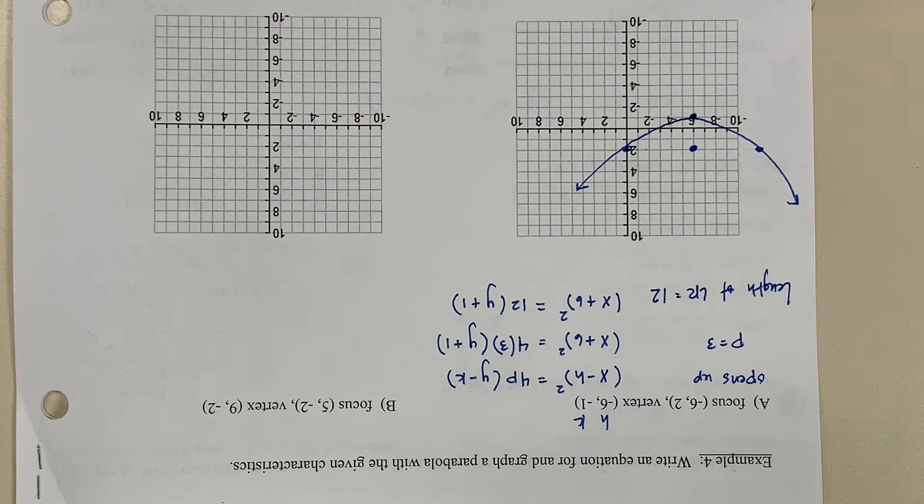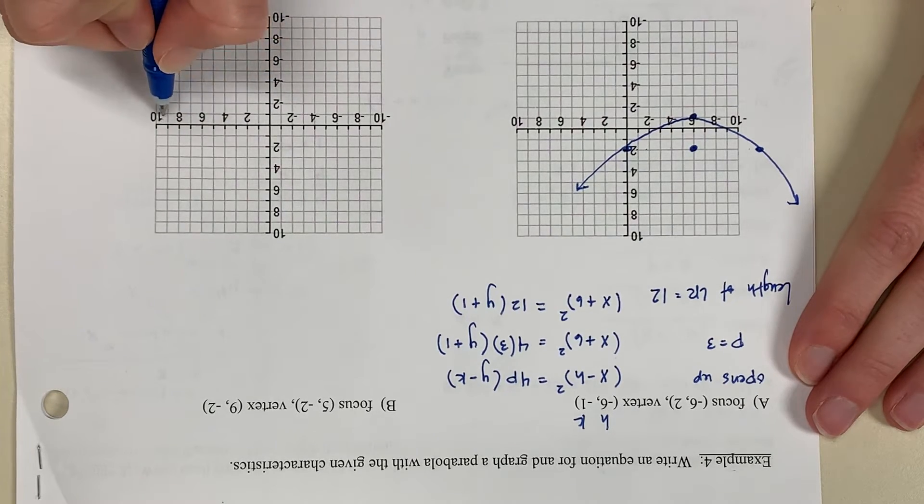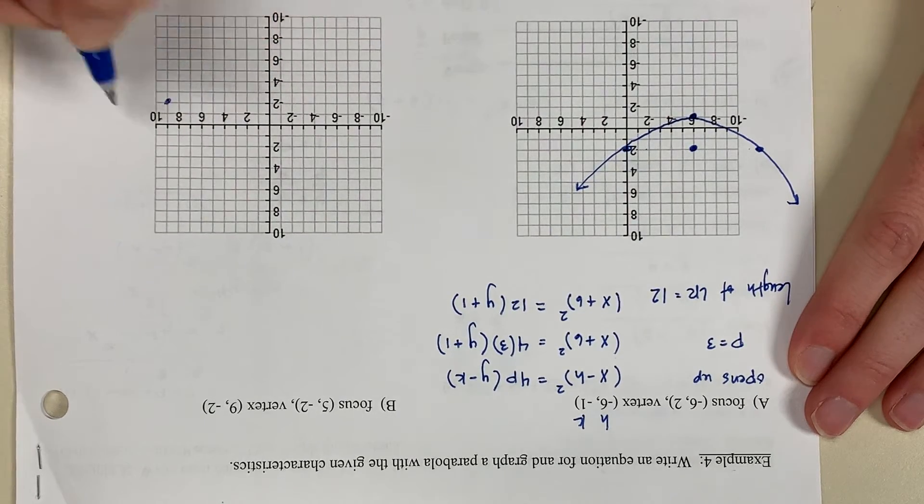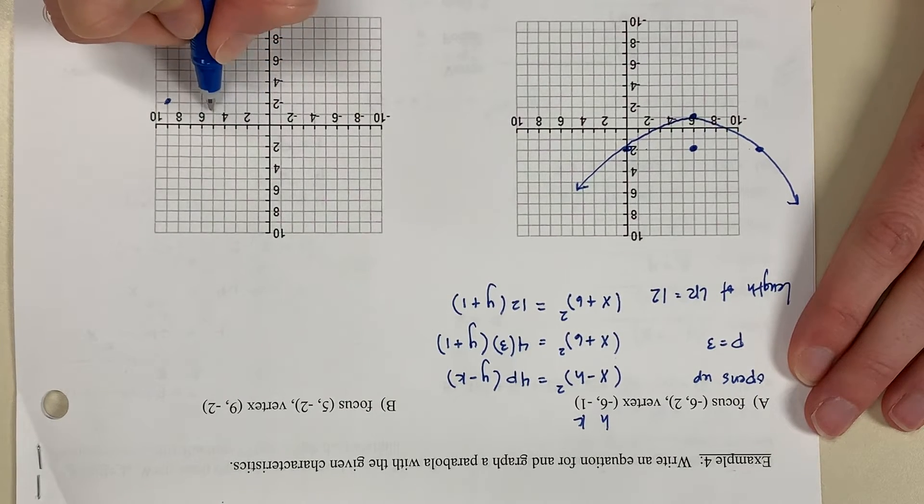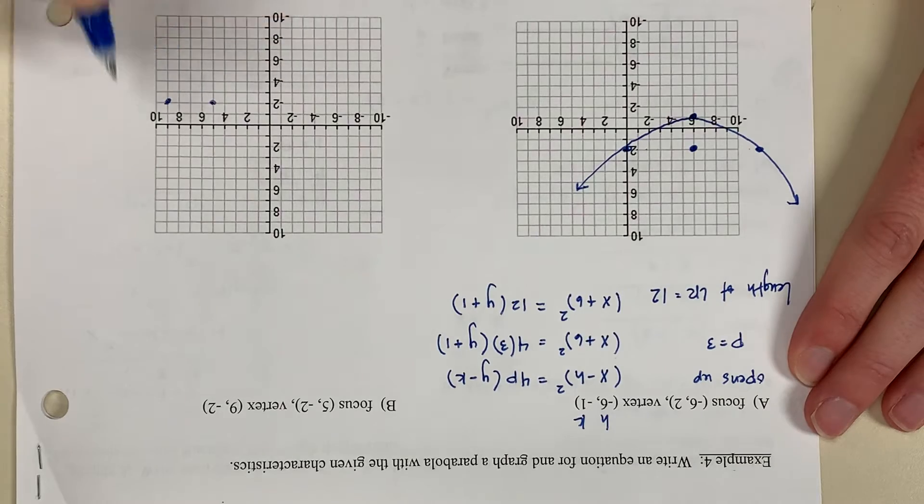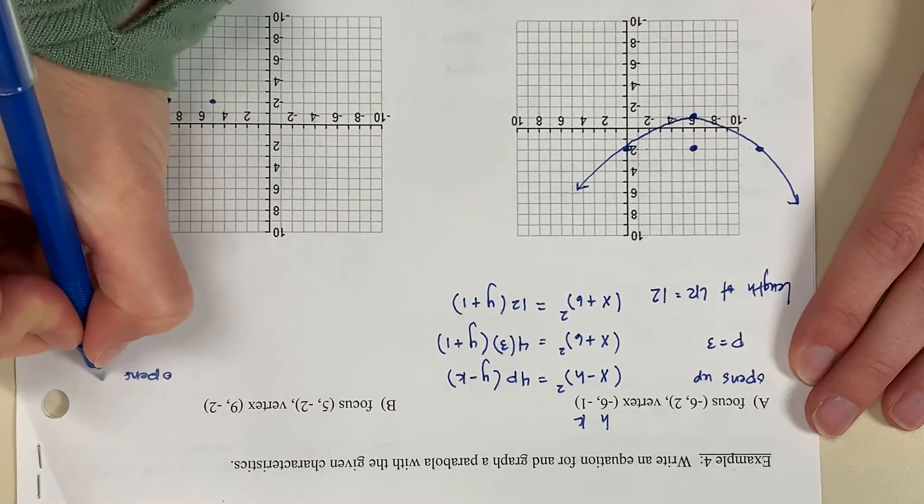Now in letter B, I have a focus at 5 negative 2 and a vertex at 9 negative 2. I'm going to plot the vertex first. So I'm going to go right 9 and down 2. Because the focus is to the left of the vertex, I know this parabola opens left.